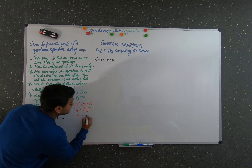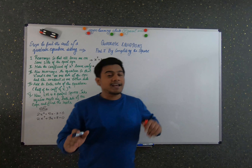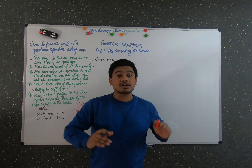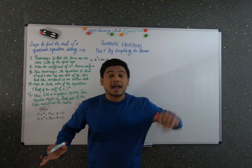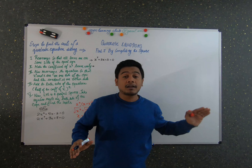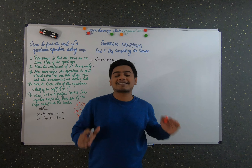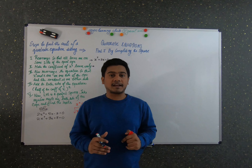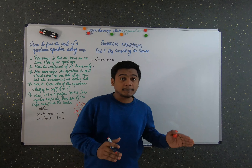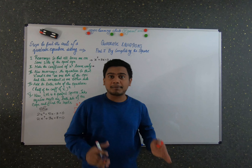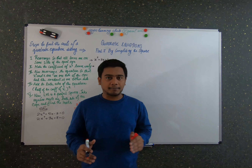You can readily find your answer as plus or minus 3. So the process of rearranging the quadratic equation such that one side is a perfect square and the other side is only a number, then you can readily obtain your solution by just taking the square root on both sides. This process is called the completing the square method.